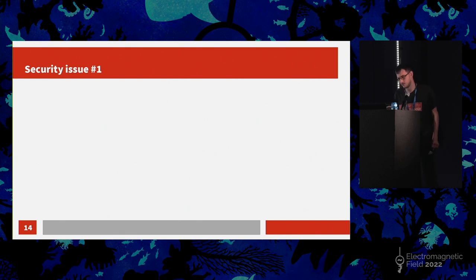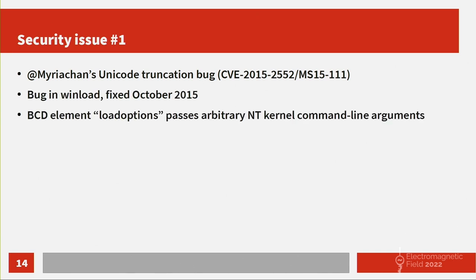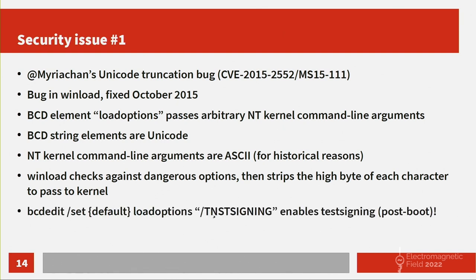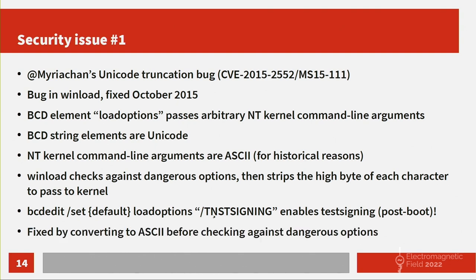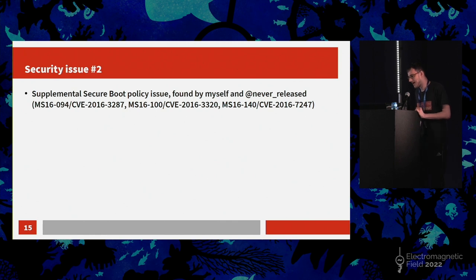Let's start talking about the security issues that were found. The first was found in 2015 by Miria in Winload — it's a Unicode truncation bug. The NT kernel allows arbitrary arguments in ASCII format, while BCD string elements are Unicode. Winload just stripped the high bytes after checking against the list of dangerous options, so you could enable test signing post-boot. This was fixed by converting to ASCII before checking against the list, and was mainly used for Windows on ARM jailbreaking. The second issue is a supplemental security policy issue found by me and a friend — note it has three CVEs, which is the number of patches required to fix it.